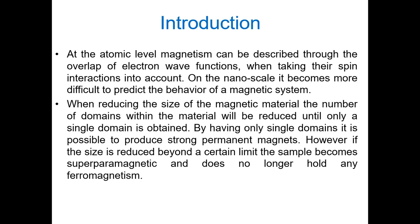When reducing the size of the magnetic material, the number of domains within the material is reduced, and we have only a single domain for nanoparticles less than 100 nanometers in diameter. By having only single domains it is possible to produce strong permanent magnets. However, if the size is reduced beyond a certain limit, the sample becomes superparamagnetic and behaves like a paramagnetic material.